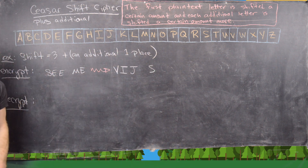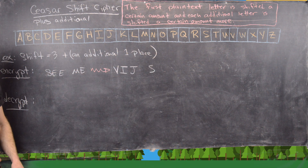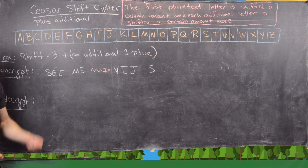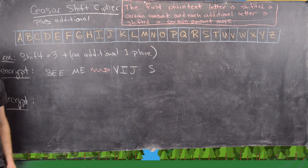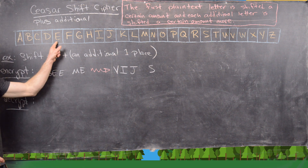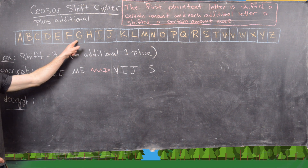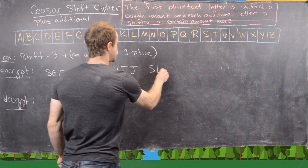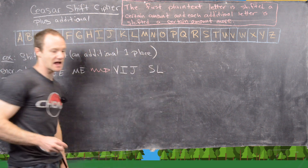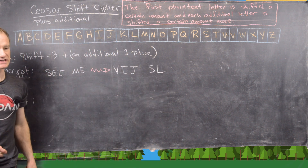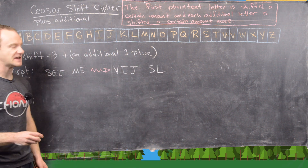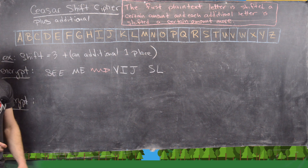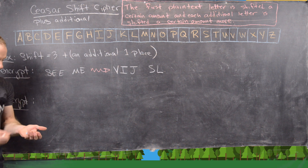Finally, the last E is shifted 7 units, going to L. So our ciphertext is V-I-J-S-L.